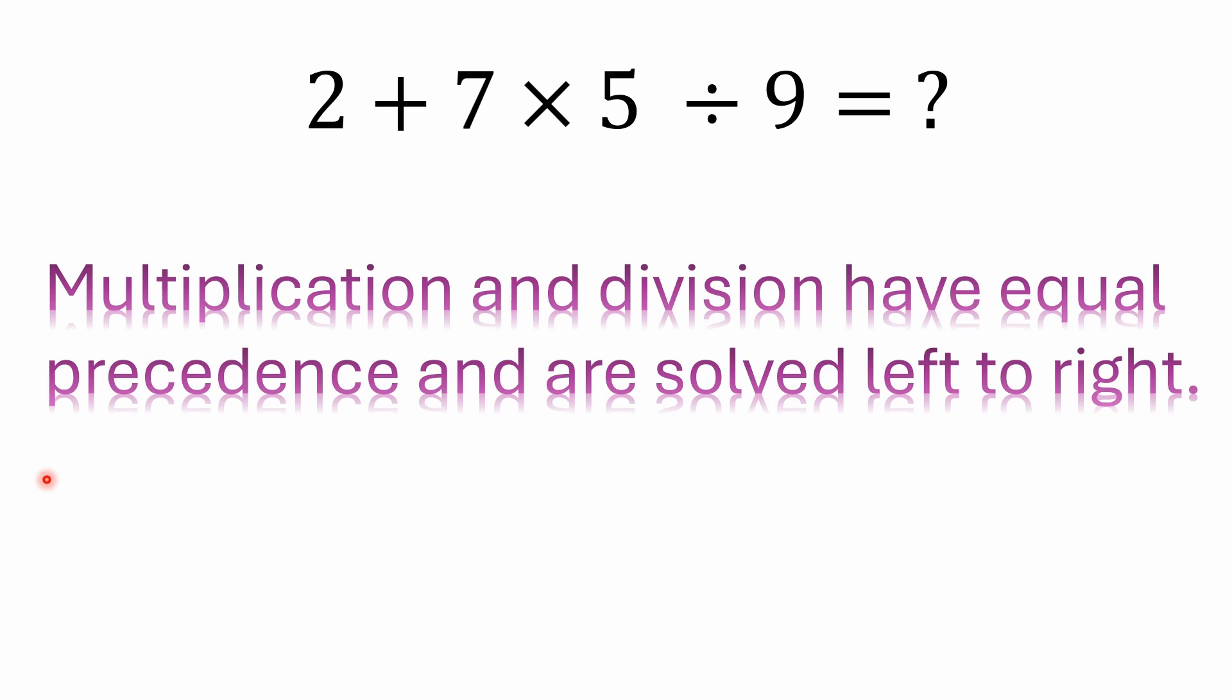7 × 5 is 35 plus 2 is 37, and then you'd have 37 ÷ 9 because the old interpretation of the obelus was that everything to the left of it was considered a numerator, which is basically the same thing as putting parentheses or brackets around the 2 and the 5.